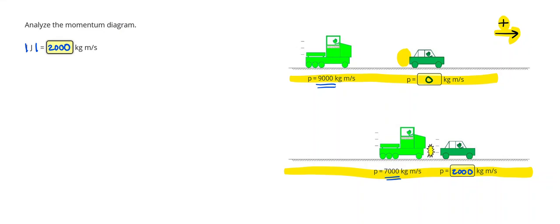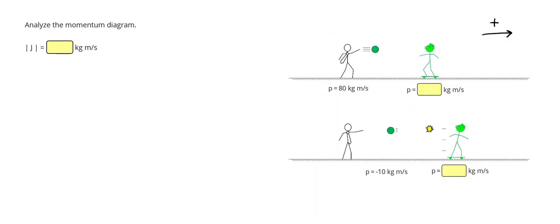We can double check our answer by looking at the car. The car started off with no momentum, ended up with 2,000. So it gained 2,000. So this answer for impulse should be able to be calculated whether you look at, no matter which object you look at. Let's do another example.